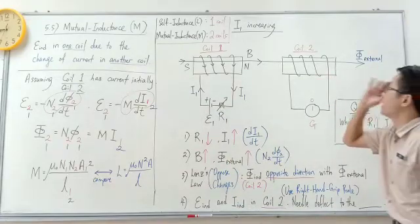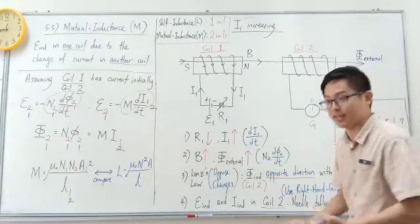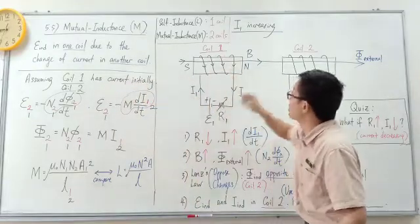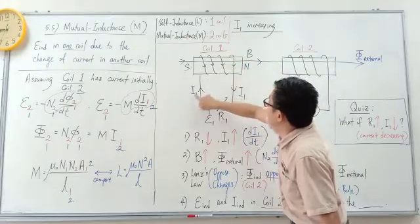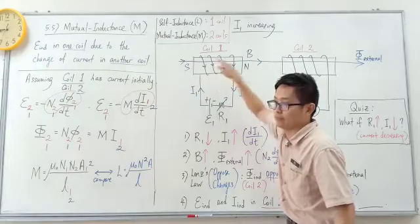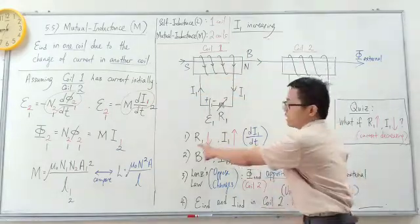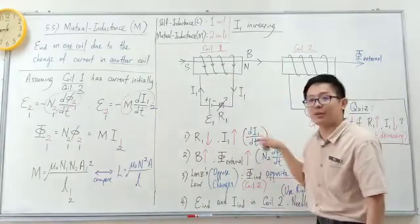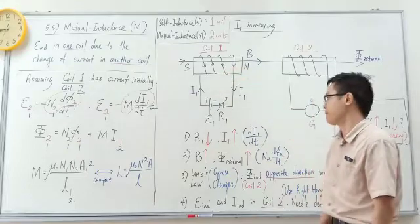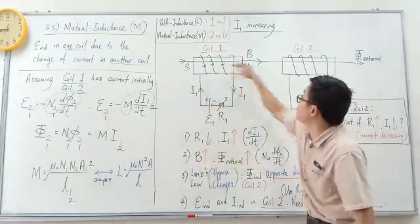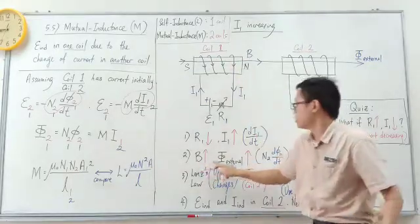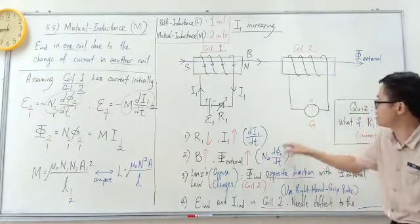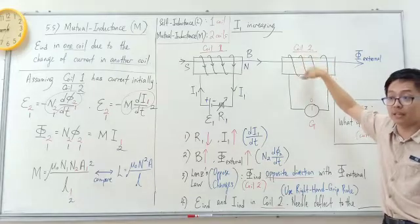Now let's look at the process in mutual induction. Coil one initially has current from a battery. The case is: we try to increase the current in coil one, I1 increasing. We increase it by decreasing the resistance, so the current increases. There is a dI1/dt — a change of current in coil one. When current increases, the magnetic field given off by coil one increases, and so the external magnetic flux received by coil two also increases. There is a change of magnetic flux happening in coil two.